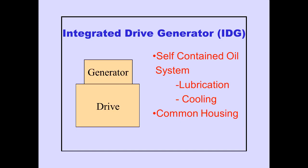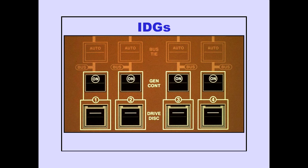Each generator is driven by its respective engine through a constant speed drive unit. Each drive unit contains an interconnect coupling with both manual and automatic disconnect capability, and a self-contained oil system for lubrication and cooling. The combined drive unit and generator is known as an integrated drive generator, or IDG. Each of the four IDGs is depicted schematically on the electrical system panel.